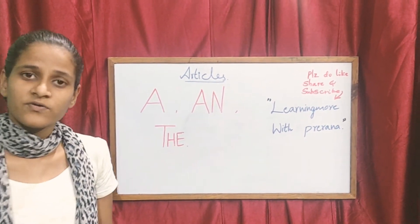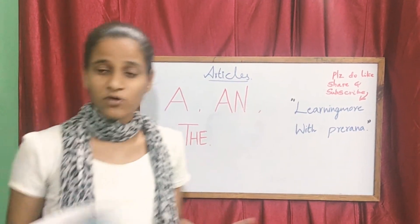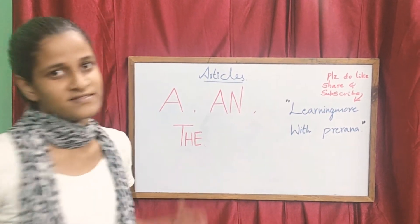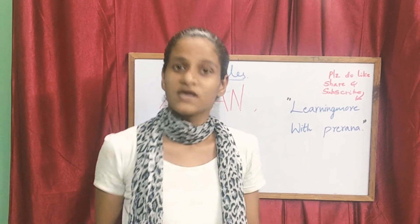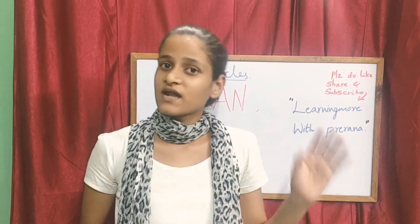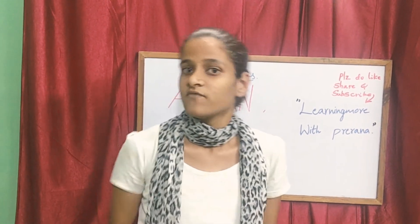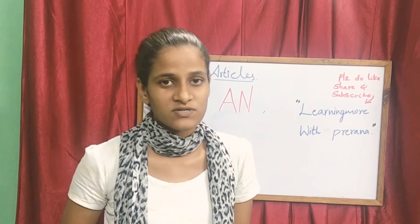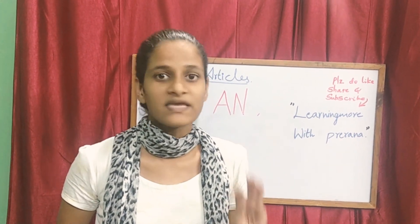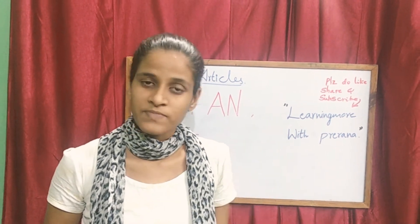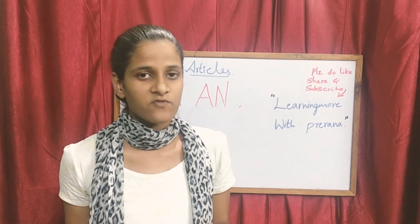Friends, as you all know in articles we study about three things — that is A, An, and The. But we don't know what are the rules that are applied in these articles. Before this, you should know a basic thing about the English alphabet: there are 26 alphabets and they are divided into two types — one is vowels and one is consonants. Vowels are A, E, I, O, U — there are five vowels, and the leftover 21 are consonants.